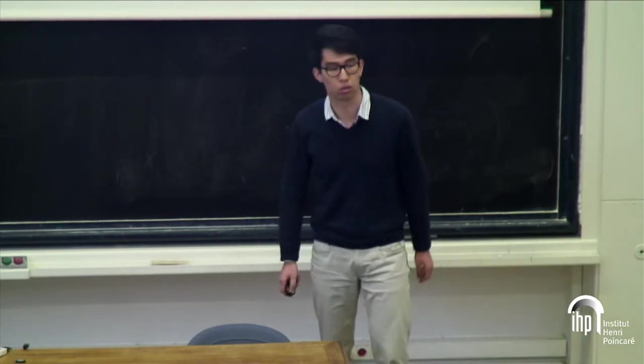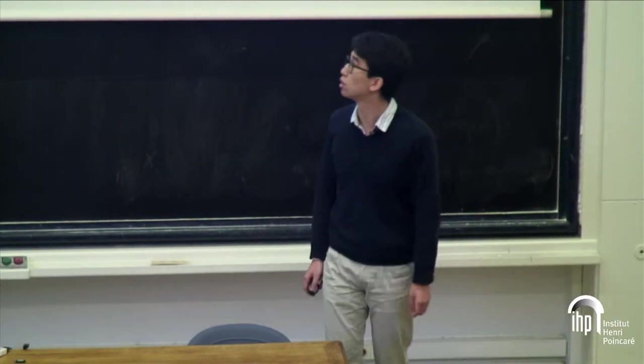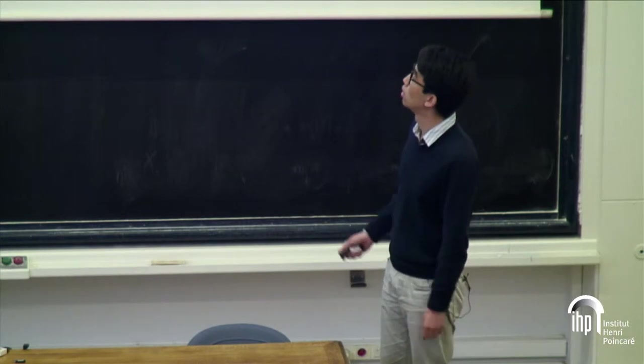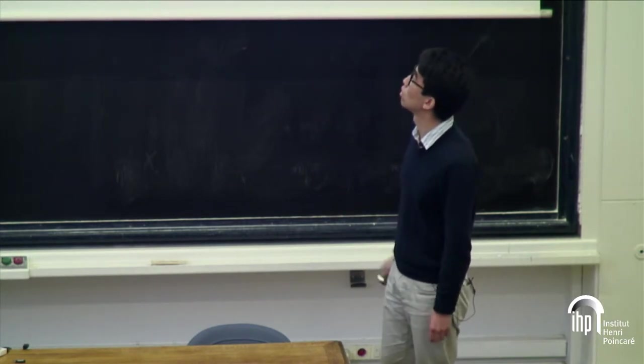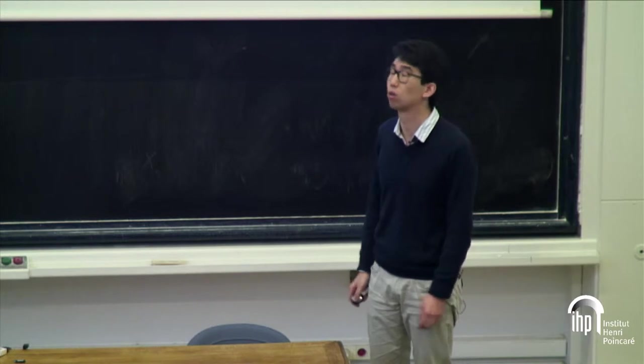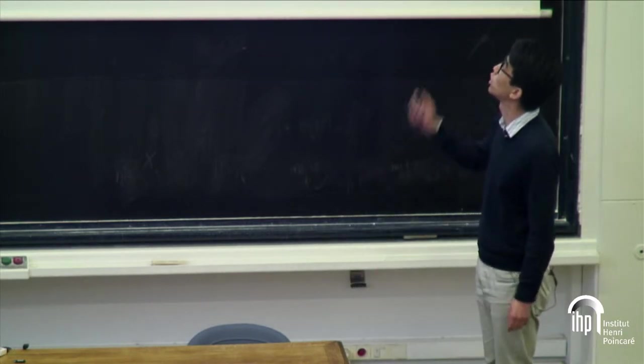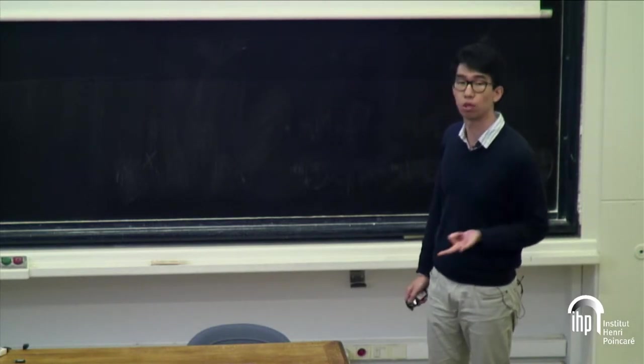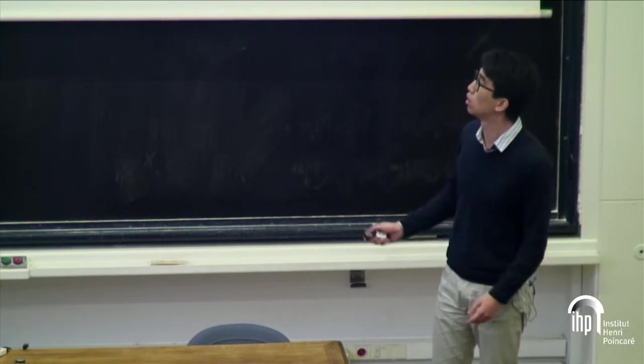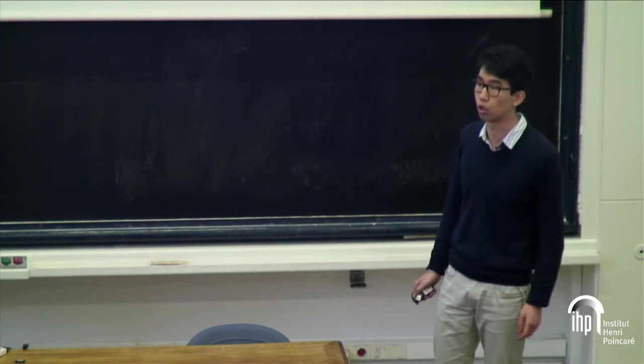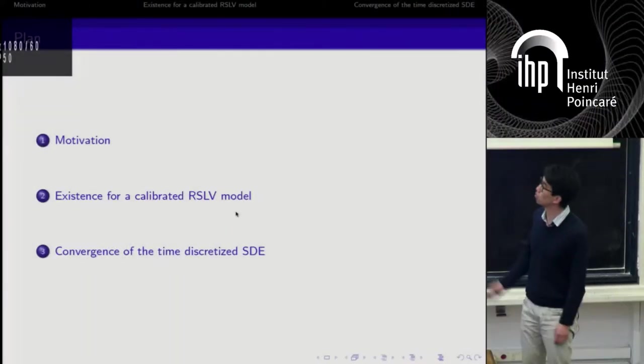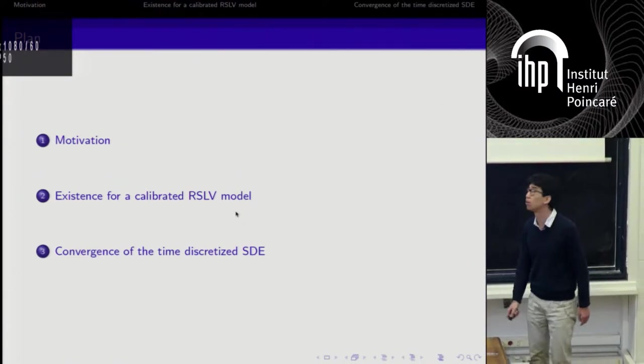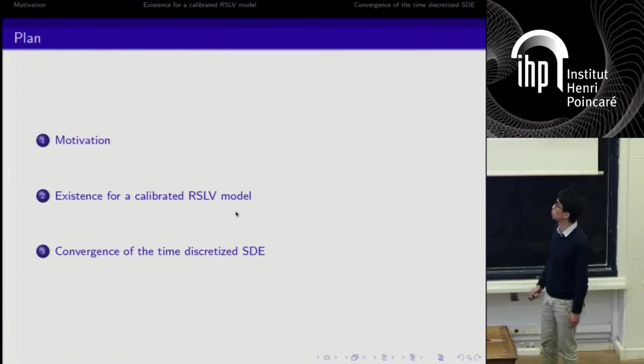Today I will speak about local and stochastic volatility models. One of the results is the existence for a specific local and stochastic volatility model which we call regime switching local volatility. I will spend a lot of time motivating this problem and then speak about two results we obtain about those local and stochastic volatility models.